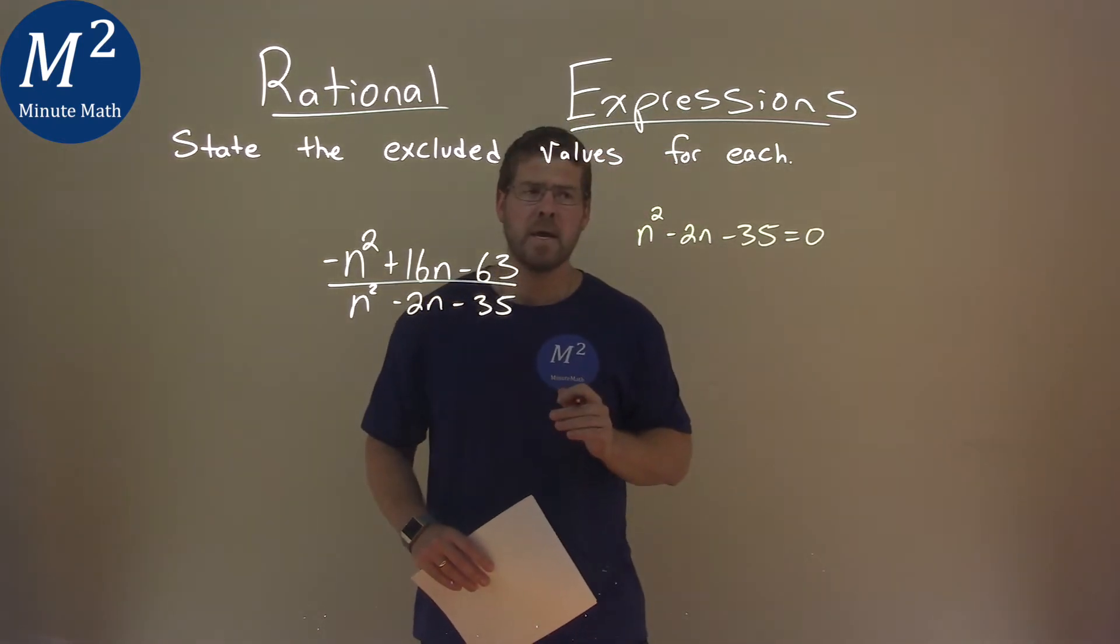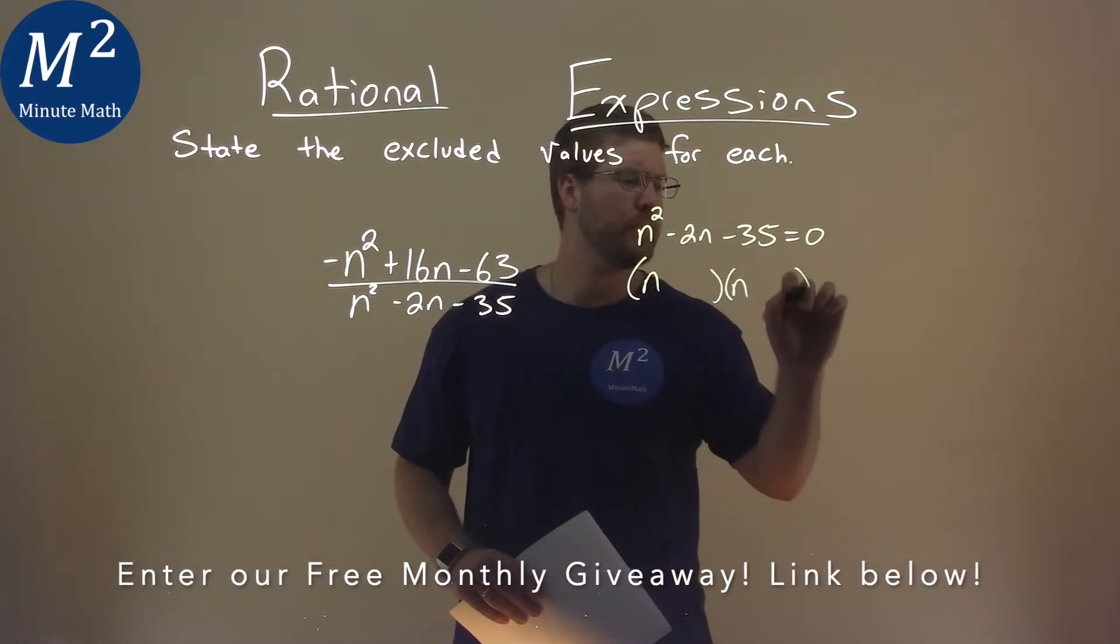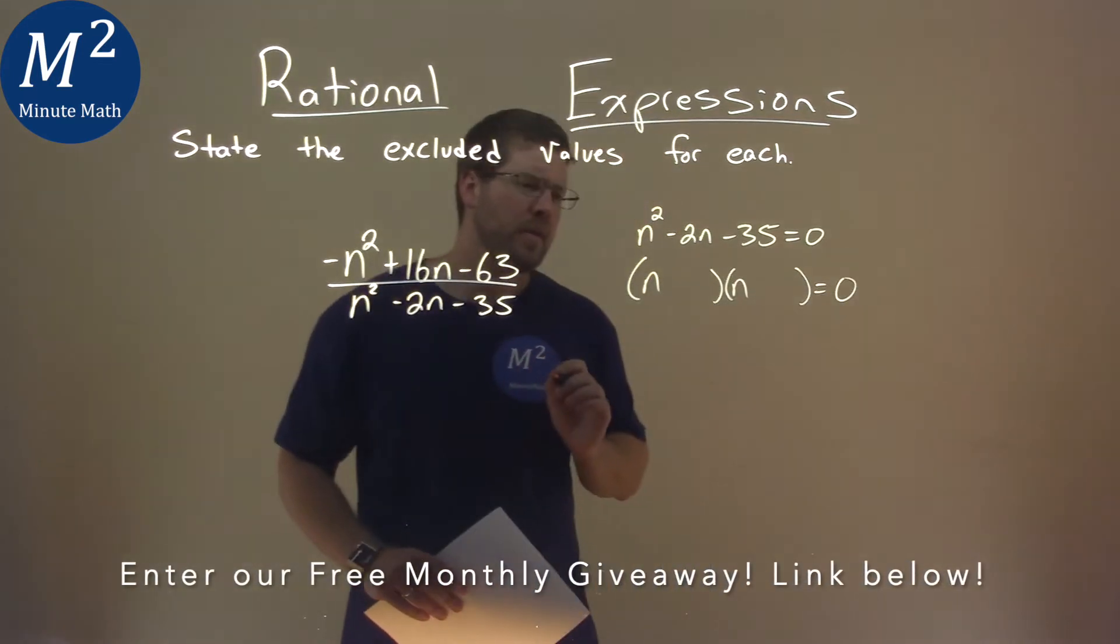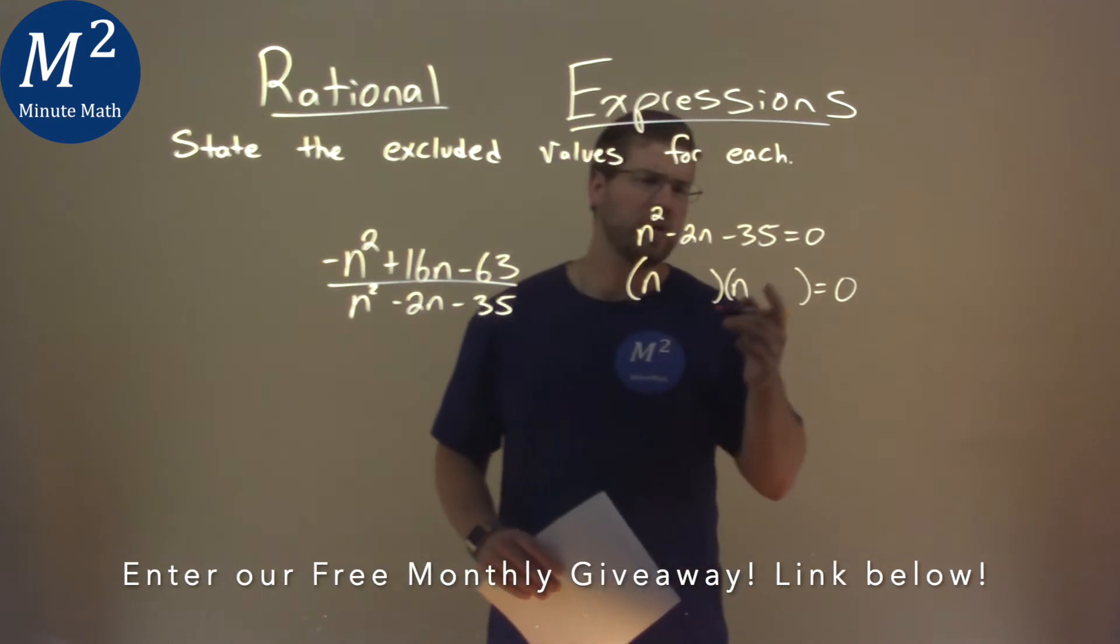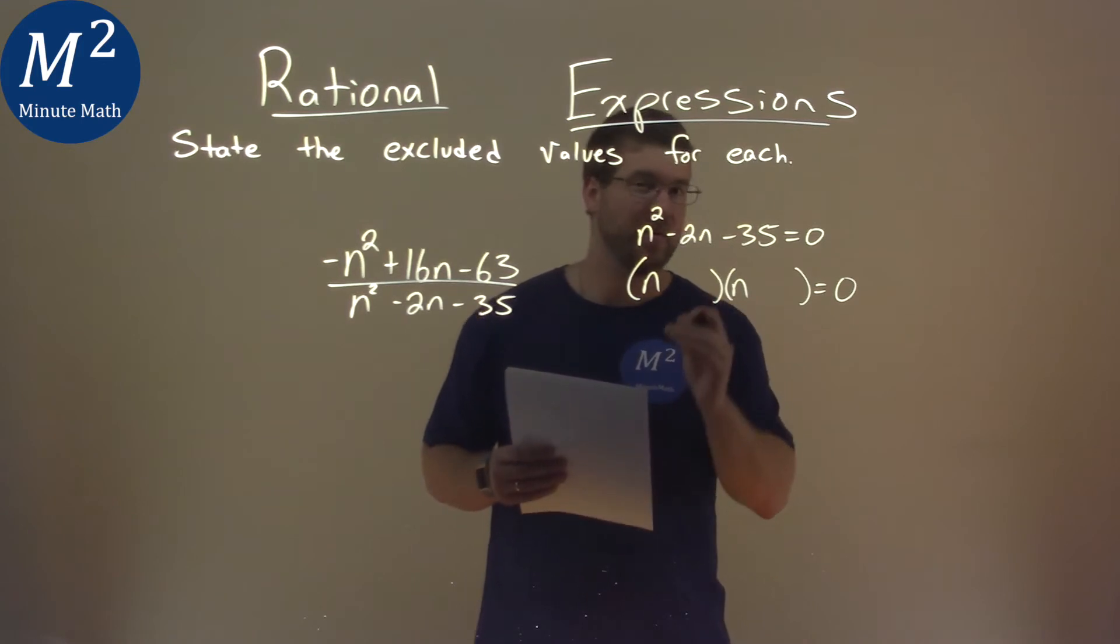An easy way to do that is to see if we can factor this. We have an n here in the form, and we want to ask ourselves what two numbers multiply to be negative 35, but add to be a negative 2. Can you get it?